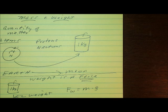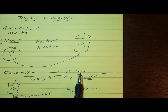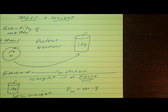Mass is a quantity of matter. It depends on the protons and neutrons in the object. It doesn't change from place to place, it's constant, it stays the same. Weight, however, is a measure of the force of the pull of gravity, and you can calculate it using the equation force of weight equals mass times gravity.